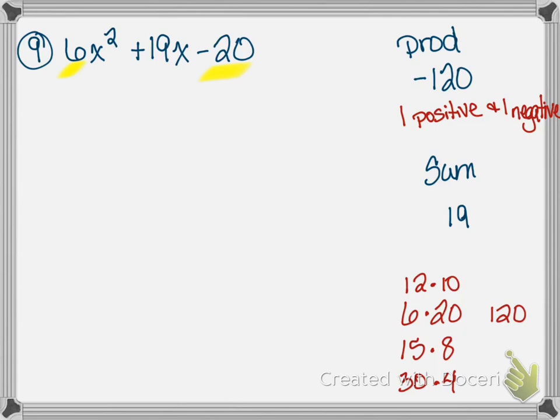Does 14 go into 120? 120 divided by 14 doesn't work evenly. We already have 8 and 15. Let me try 6 and 20, 12 and 10. 25 doesn't go in; 4 does, giving 4 and 30. We're still searching — it's definitely not prime. A problem is prime only if you truly cannot find two numbers multiplying to negative 120 and adding to 19.